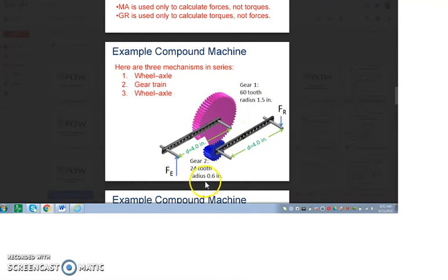So it gives us some numbers. It gives us a diameter of 4 inches or a distance of 4 inches here, so that would be a diameter of 8. And then it tells us this gear has a radius of 1.5 inches to give us a diameter of 3.